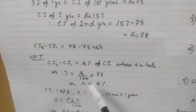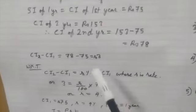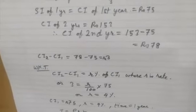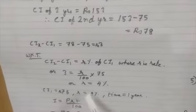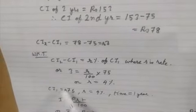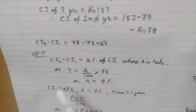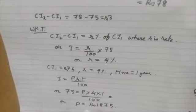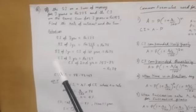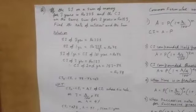So 3 is equal to r percent of 75. Solving, r is equal to 4 percent. Now once we find the rate, we have the rate and we have the first year's compound interest, which is nothing but the simple interest for one year. Using I equals PRT by 100, we find the sum of money P is equal to rupees 1875.